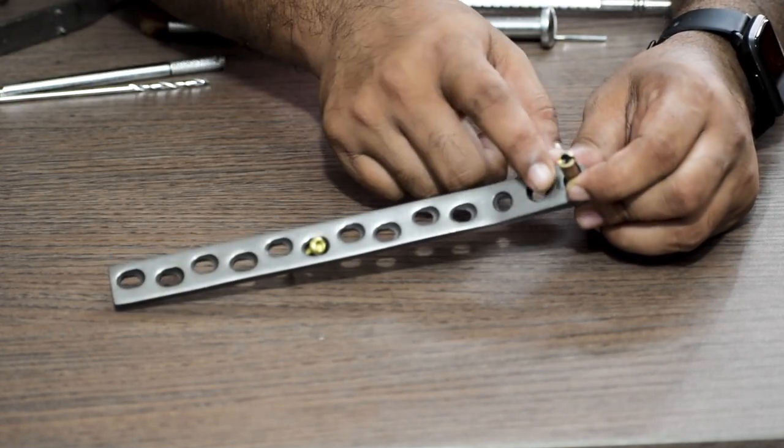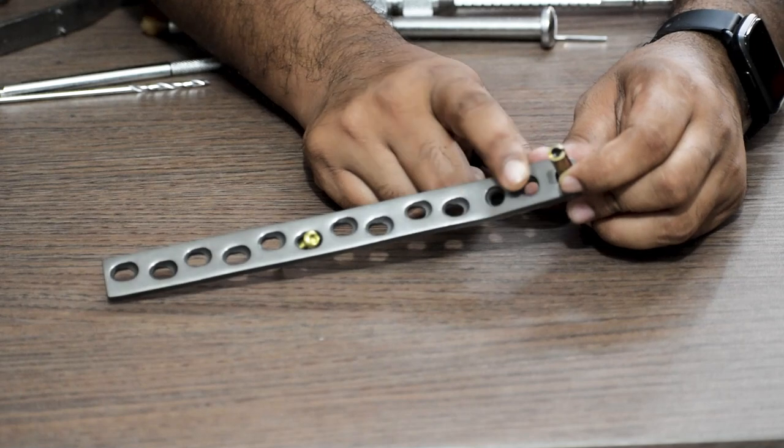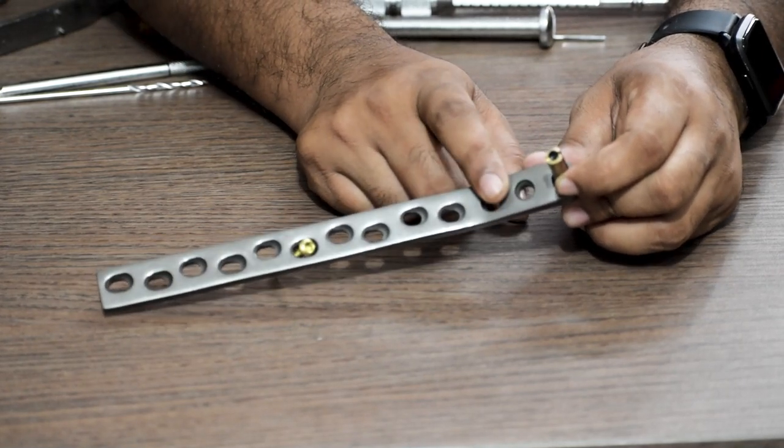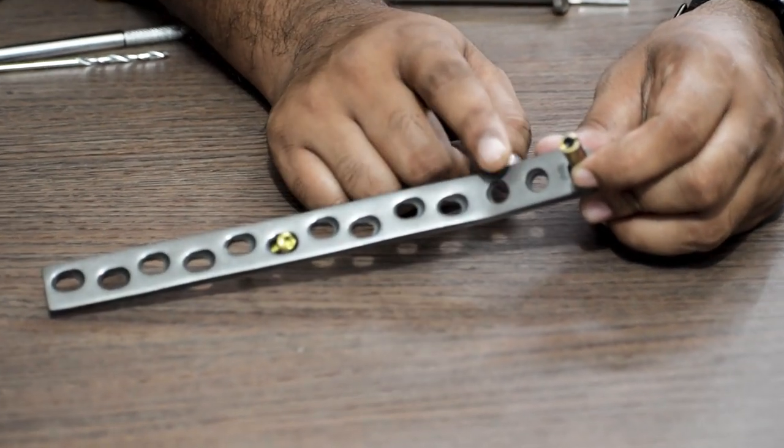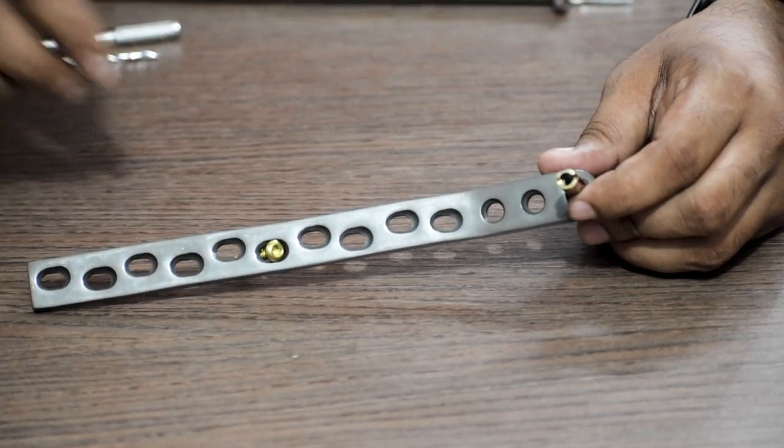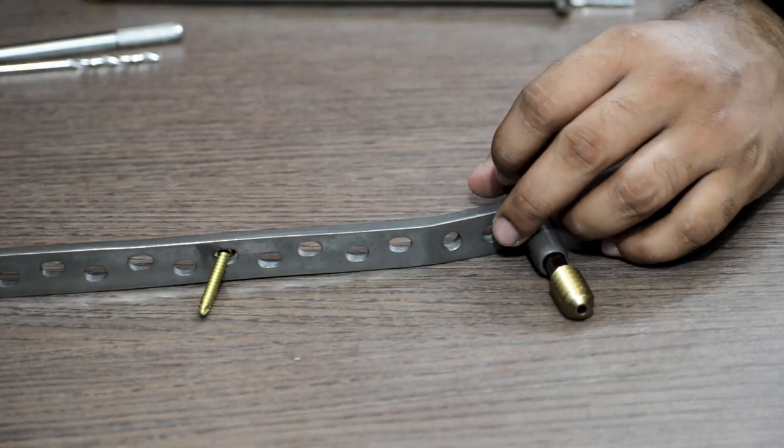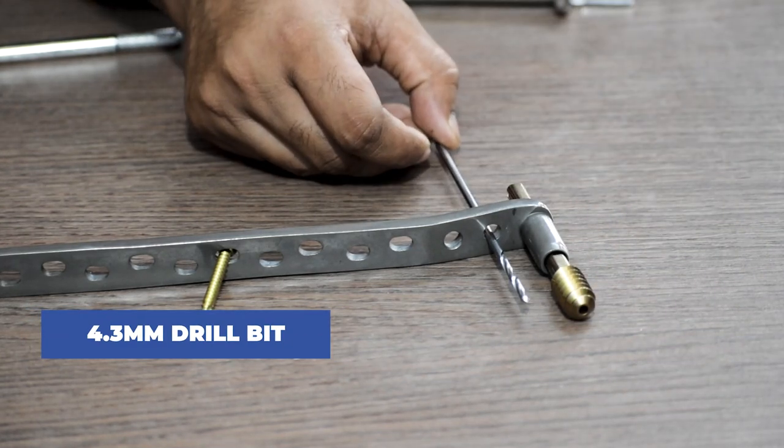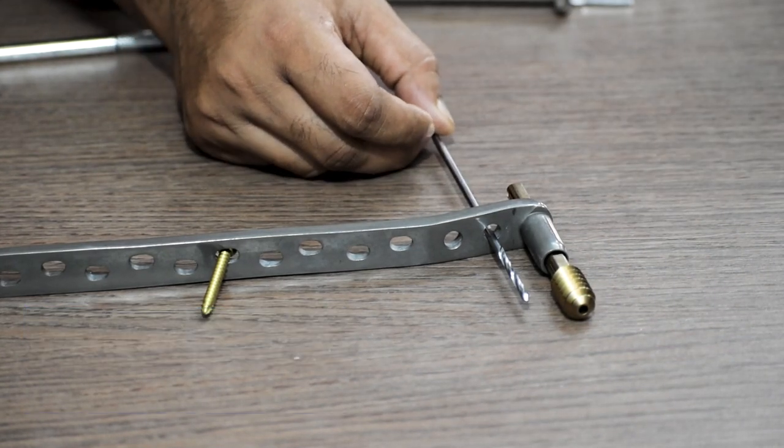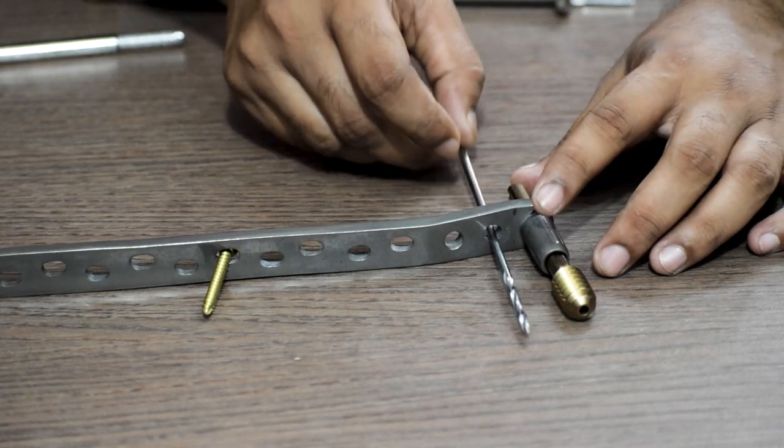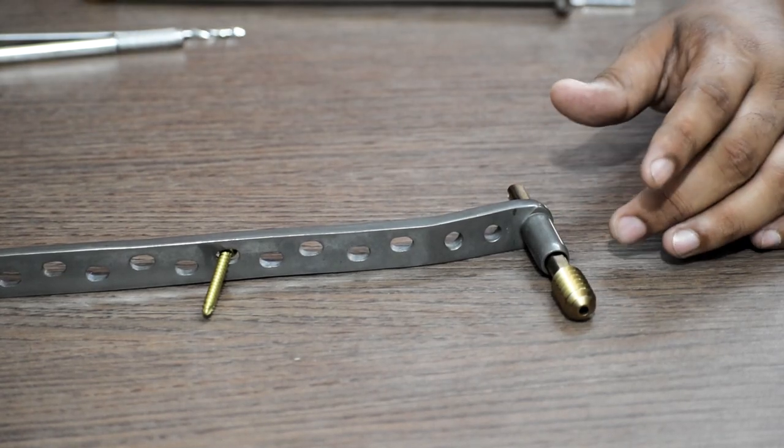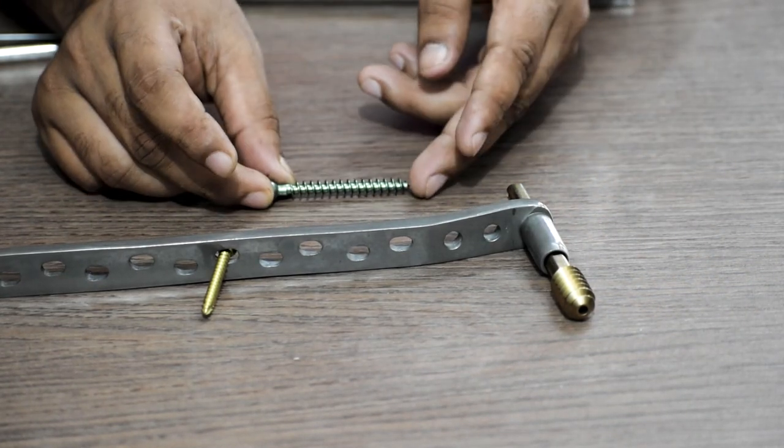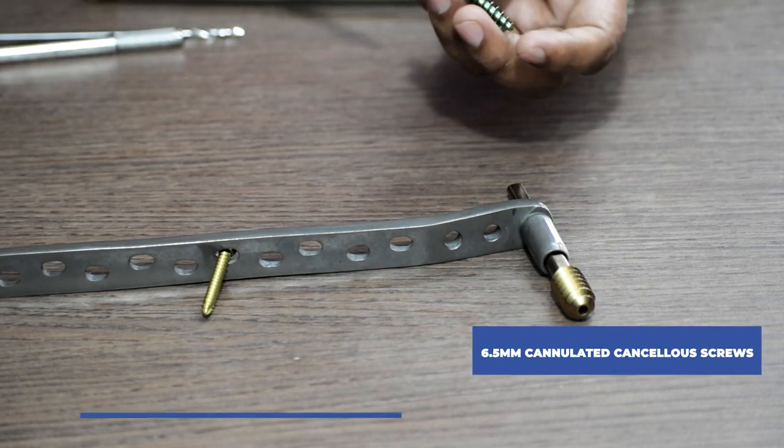These two holes are for 6.5 mm cancellous screw. Cortical screws are not fixed here. For that we use a 4.3 mm drill bit. Measure the length with the help of a depth gauge and take a 6.5 mm cannulated cancellous screw of the measured length.